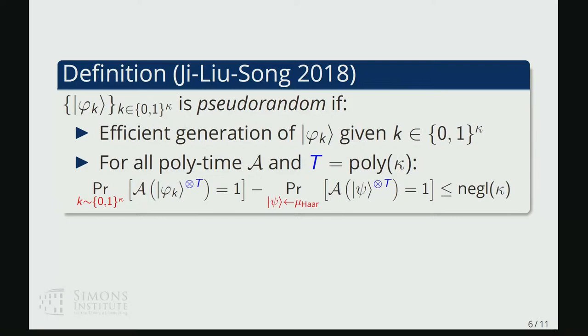and it has this computational indistinguishability criterion, which just says that for any polynomial time adversary, the adversary cannot distinguish copies of a random state drawn from the pseudorandom ensemble from copies of a uniformly random,